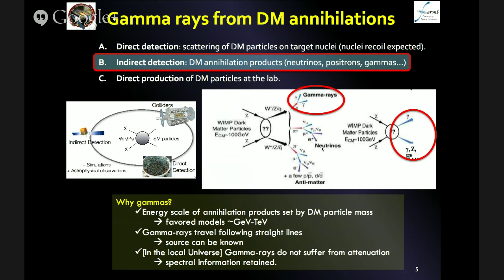There are different approaches to try to detect the dark matter particle. I will focus here on the indirect detection technique, and in particular we will be talking about gamma rays. There can also be other annihilation products like neutrinos, positrons, and so on, but we will focus on gammas because we want to report on the Fermi LAT results. There are good reasons to focus on gammas: you have good knowledge of the intrinsic spectrum because gamma rays do not suffer from attenuation, at least in the local universe. Also, in the preferred dark matter particle physics models, the mass of the dark matter particle is typically in the GeV to TeV energy range, which naturally gives you gammas. And gamma rays travel in straight lines, so you can track them back to know the emitting source — something you cannot do with positrons or charged particles.